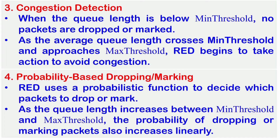RED uses a probabilistic function to decide which packets to drop or mark. As the queue length increases between the min threshold and max threshold, the probability of dropping or marking packets also increases linearly. Based on this probabilistic function, RED determines packet drop or marking probabilities as the queue length increases, preventing congestion escalation.